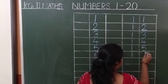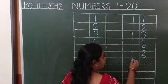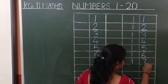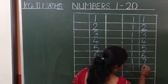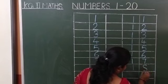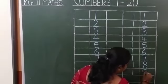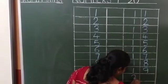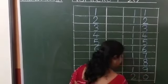1, 6 — 16. 1, 7 — 17. 1, 8 — 18. 1, 9 — 19. 2, 0 — 20.